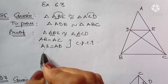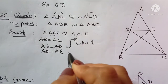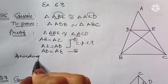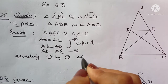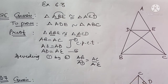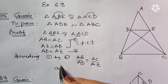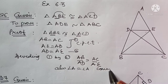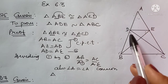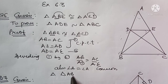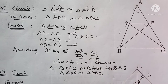Now if we rearrange, we can write AD is equal to AE — it is one and the same thing. Let me name AB = AC as equation 1 and AD = AE as equation 2. Dividing equation 1 by equation 2, we get AB upon AD is equal to AC upon AE. So triangle ABC is similar to triangle ADE by SAS similarity rule.